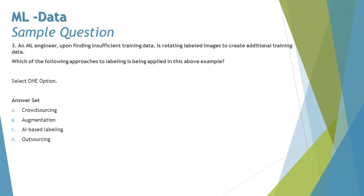Moving on to question number three: an ML engineer, upon finding insufficient training data, is rotating labeled images to create additional training data. Which of the following approaches to labeling is being applied in this example? This question is quite an extension of our previous one about insufficient data — we are now trying to fulfill that data insufficiency, but the key question is: what technique or approach is being used here?